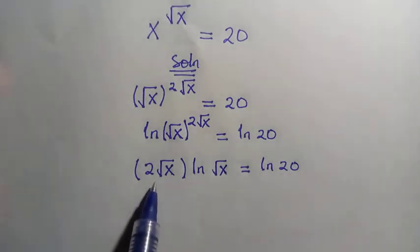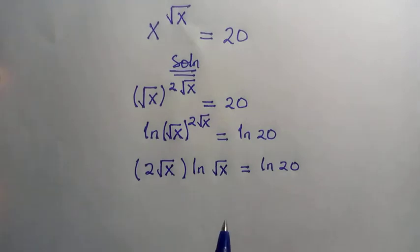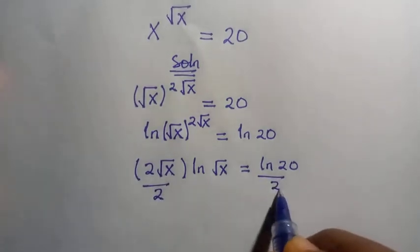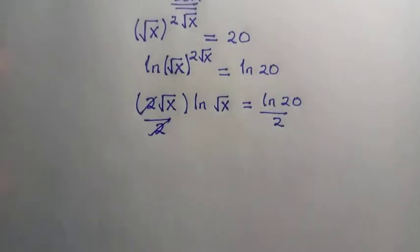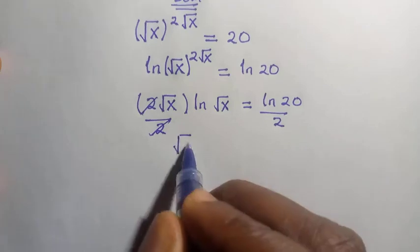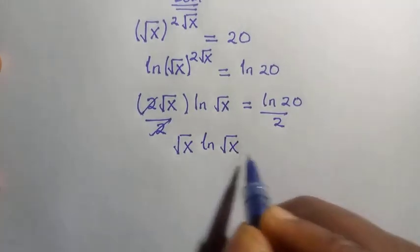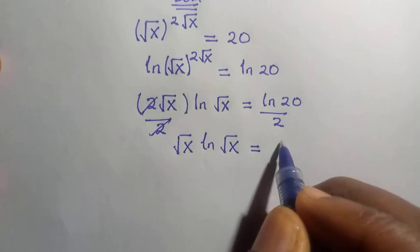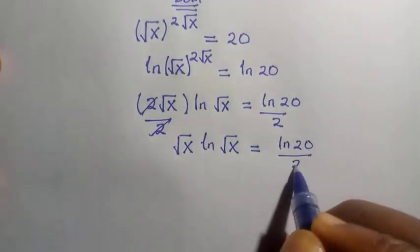So here we have 2 root x and here we have ln x. Suppose we divide by 2 here. These 2 cancel 2. And we have the root of x ln root x equals ln 20 divided by 2.